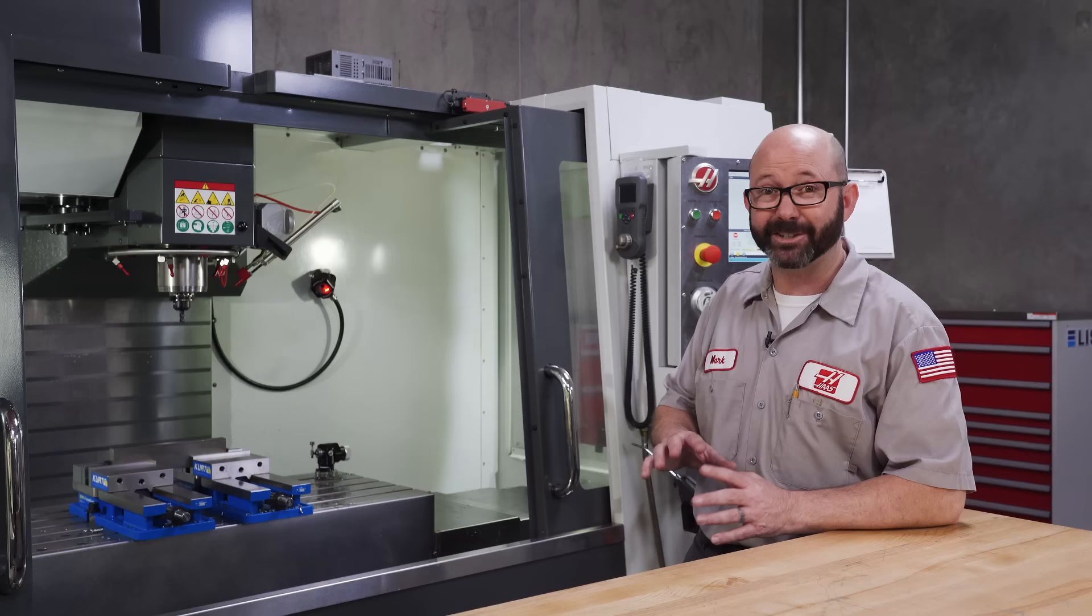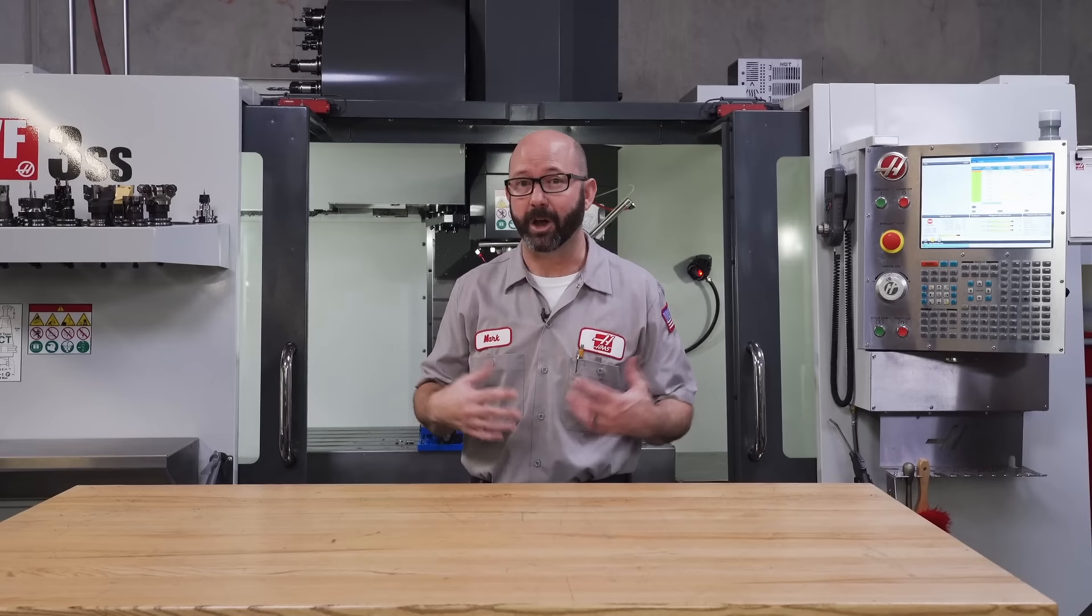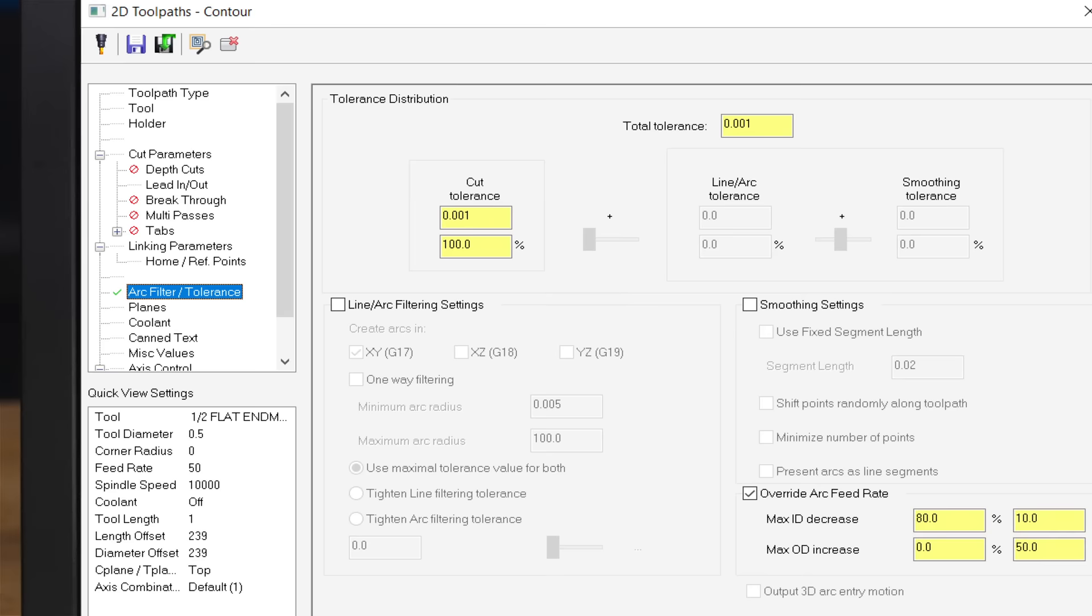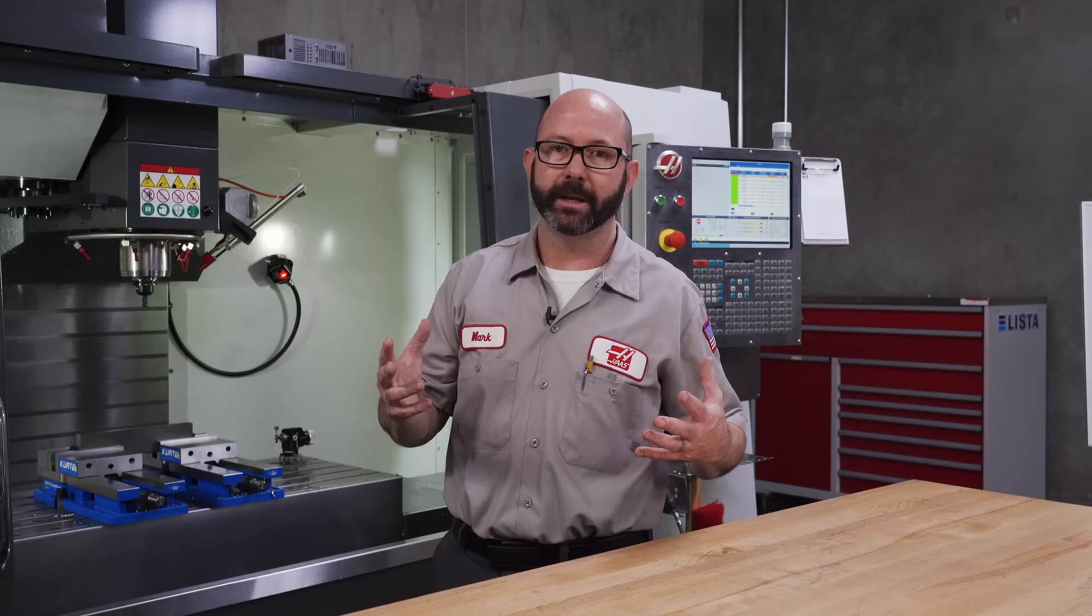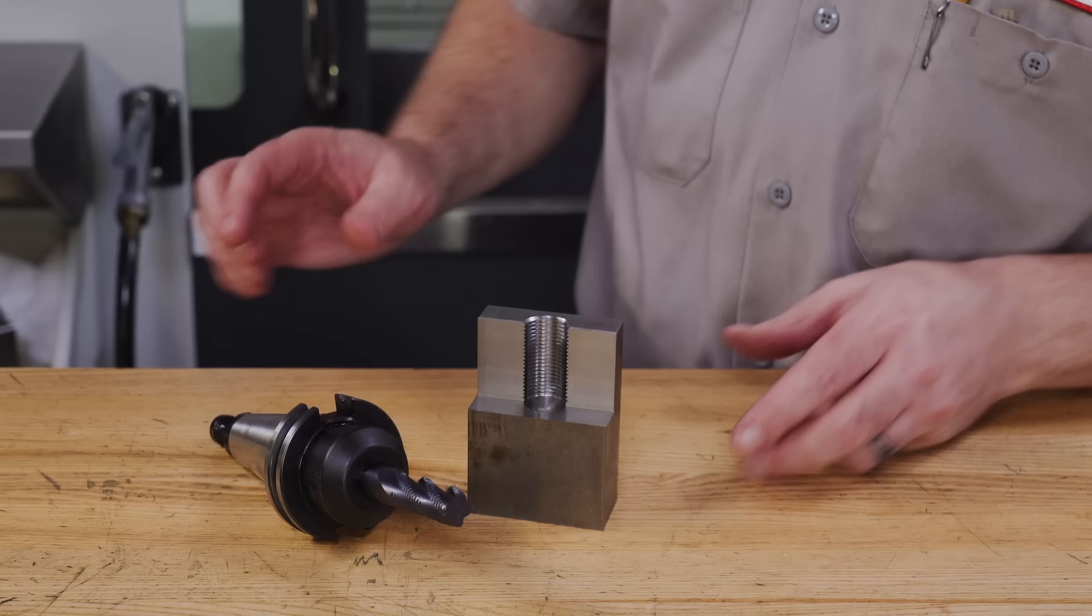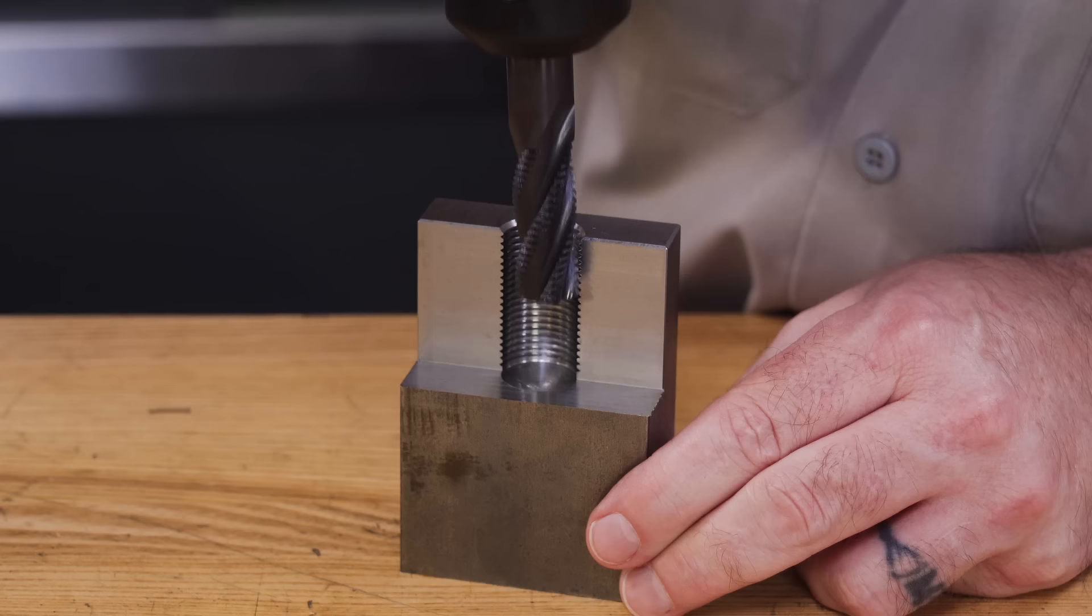Solution number one, which is always my first choice, is to see if your cam system can compensate for this automatically. Some cam systems, like Mastercam, can override arc feed rates, adjusting the feed rate on every inside corner if you'd like them to. Changing the feed rate on every G2 or G3 arc move within a set range. This is a nice feature, but if your cam system can't compensate for this, it's not the end of the world. In my experience, this is only a big deal when milling circular pockets with big end mills or when a thread milling. And now that we know what to look for, we can compensate for this manually.